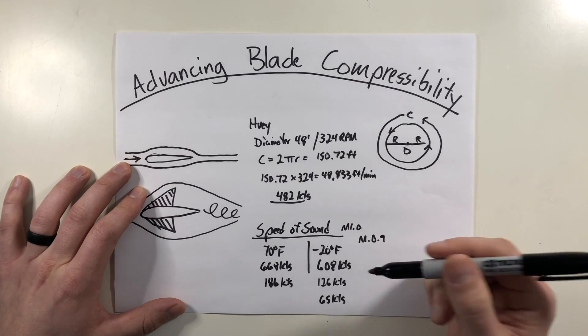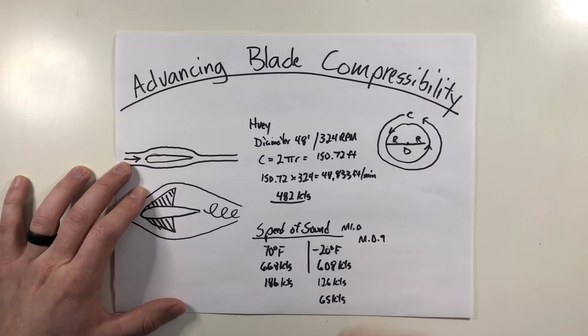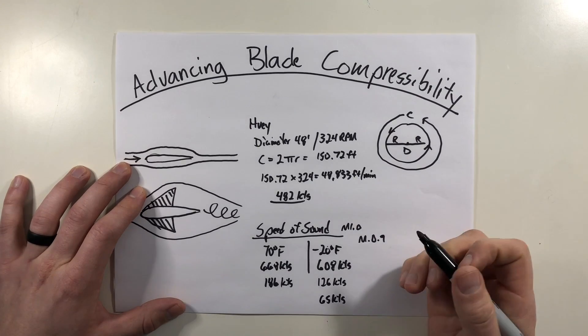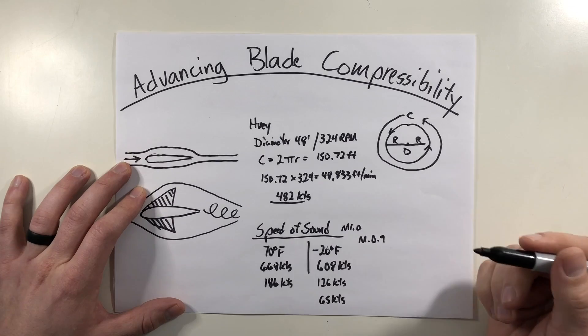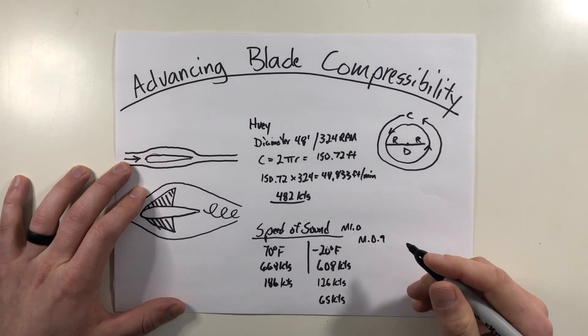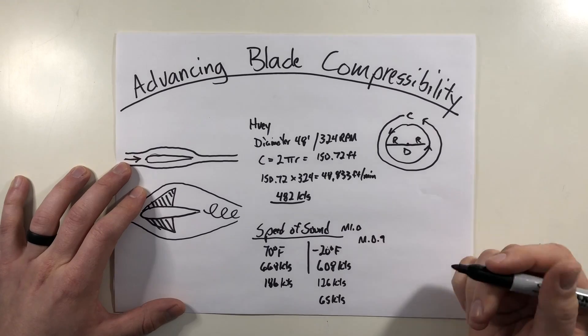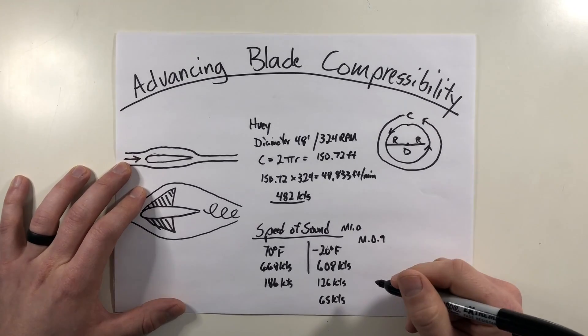Now not only is this going to be followed on with extreme vibrations, but you're potentially going to be damaging that rotor blade because your advancing blade is popping in and out of Mach 1 airspeeds. So this is stressing the blade severely and can cause structural failure very quickly in that blade.